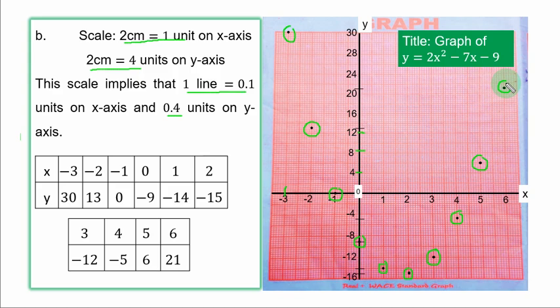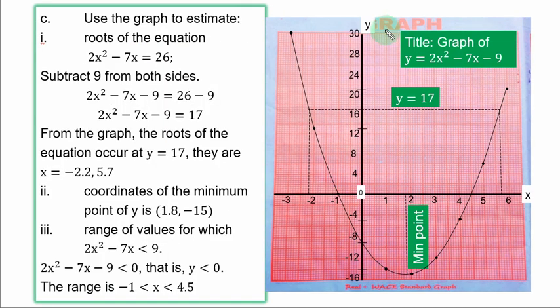Next is to join the points together. Every graph has a title, which is usually the equation being plotted. Here we only have one equation, and that becomes the title of the graph. All the points have been joined together. We now move to part c.